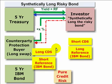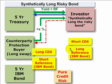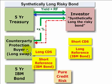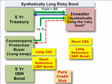To recap the potentially confusing terminology: the investor who has sold the credit default swap to the counterparty is short the credit default swap, but at the same time we can say the investor is long the reference asset — in this case the IBM bond — because they are exposed to the default on the bond. Conversely, the counterparty who bought the credit default swap is long the CDS, which is the same as being short the reference obligation, because they have transferred the credit risk away from themselves to the investor.